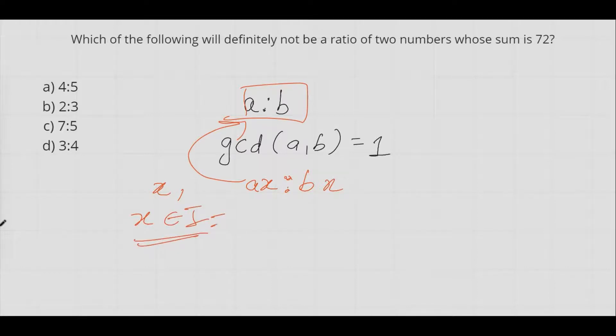If the original numbers are ax and bx, then ax plus bx would be equal to 72. That means x into a plus b equals to 72. Therefore 72 will have x and a plus b as its factors.